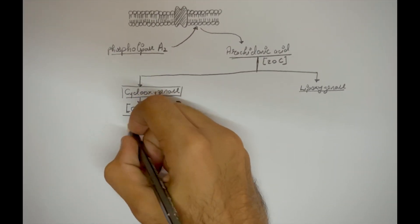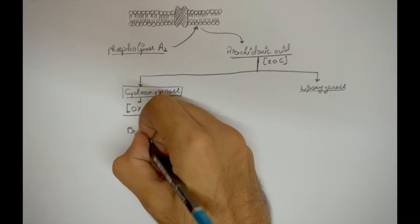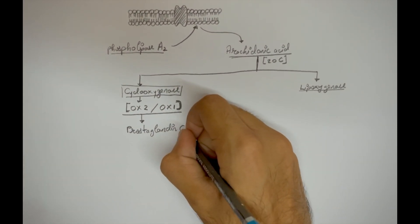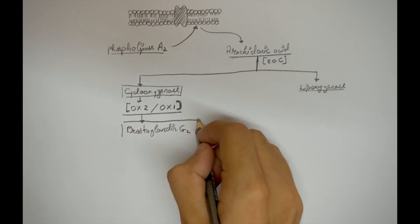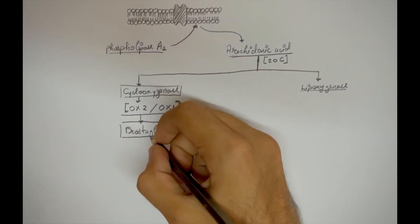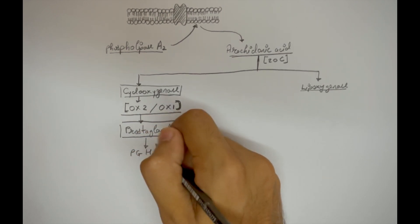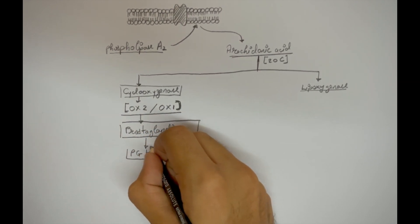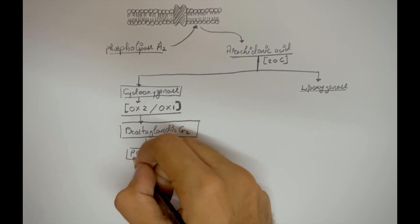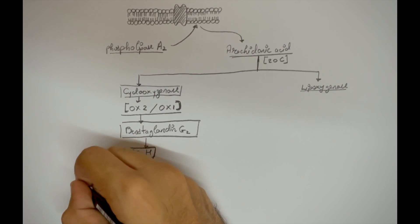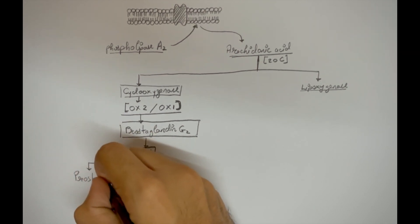The prostanoic acid will collapse to form prostaglandin G. This prostaglandin G will further convert into prostaglandin H, also termed PGH. Till now we have seen the common pathway, and now various categories of prostaglandins can be formed, for instance, prostacycline, also termed PGI2.